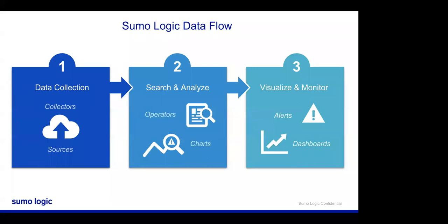Within collectors there are sources — the actual sources of data you're getting. If you're on AWS and want to grab data from your S3 logs, that's a source. CloudTrail metrics is another source. Once that data comes into Sumo, we can write metric queries or log queries to analyze, build charts, build visualizations, and incorporate them into dashboards. We can also create alerts.